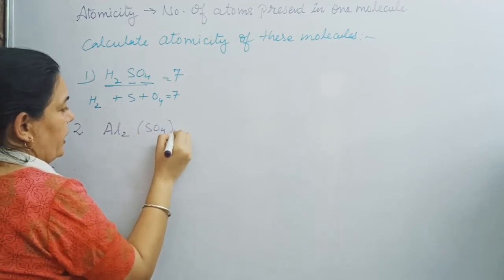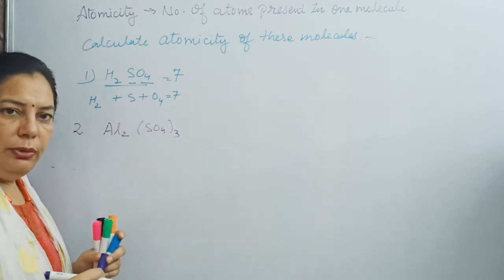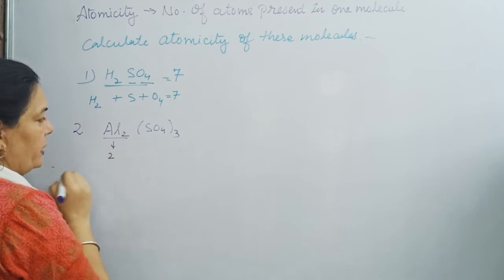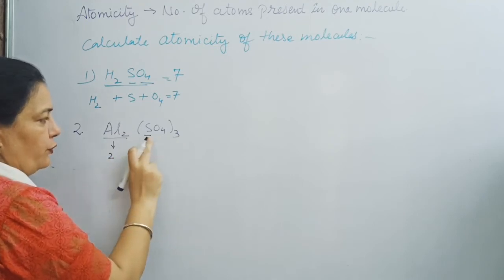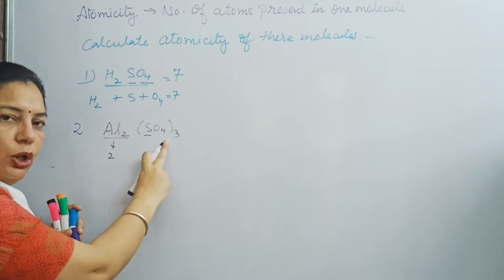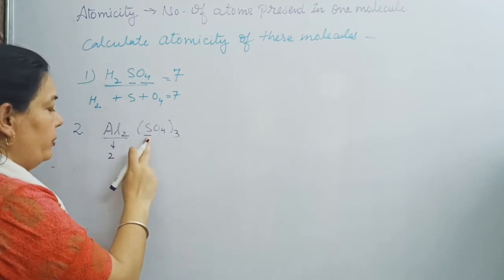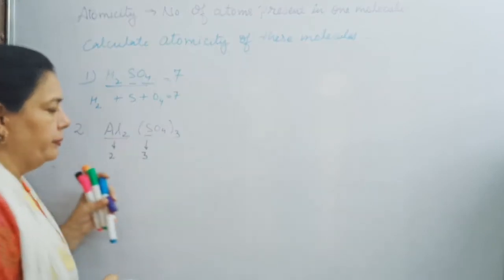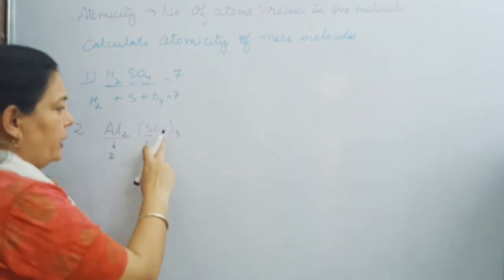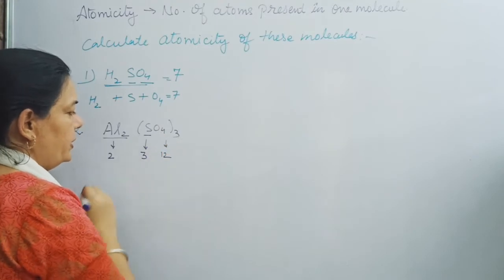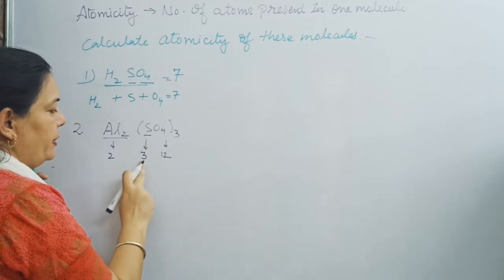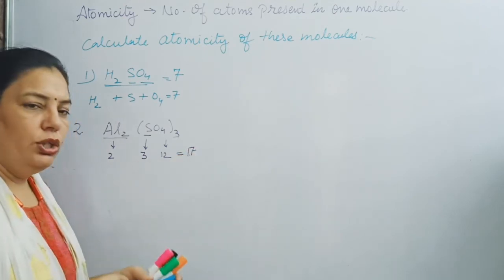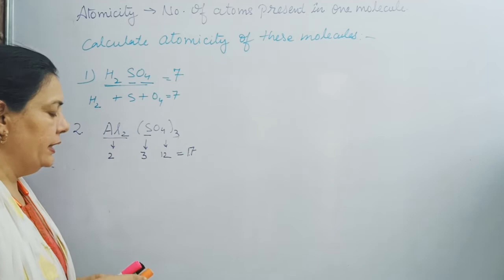One more example: aluminium sulfate, Al2(SO4)3. Aluminium: 2 atoms. Sulfur: the 3 outside the bracket applies to sulfur as well, so 3 sulfur atoms. Oxygen: 4 × 3 = 12 oxygen atoms. Total atomicity = 2 + 3 + 12 = 17. The atomicity of aluminium sulfate is seventeen.